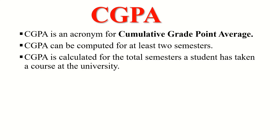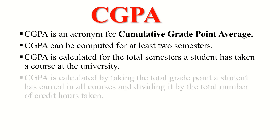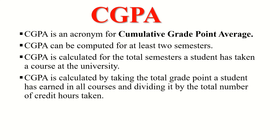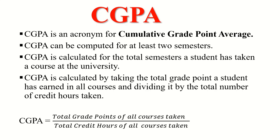CGPA is calculated by taking the total grade points a student has earned in all courses and dividing it by the total number of credit hours taken. In short: CGPA = Total Grade Points of All Courses Taken ÷ Total Credit Hours of All Courses Taken. This is the formula we'll be using to find our CGPA.